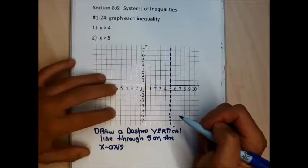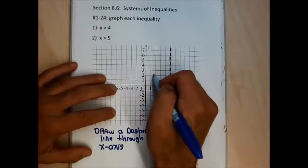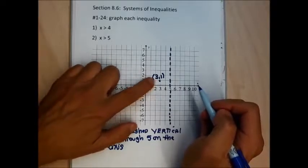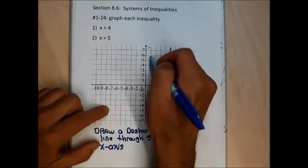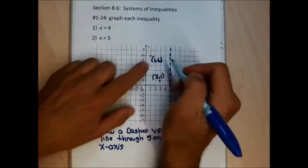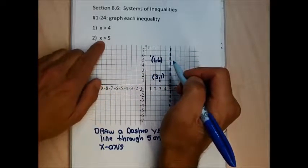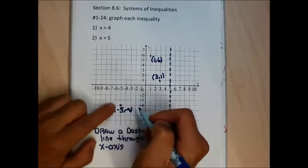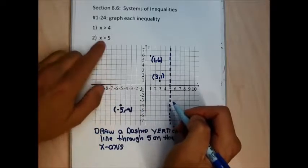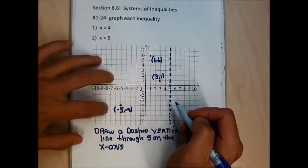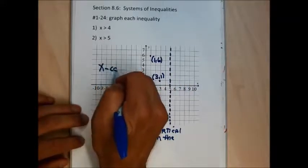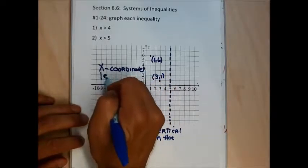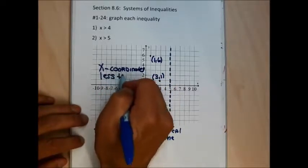Any point to the left of this line — like the point 3, 1 has an x-coordinate of 3, which is less than 5. The point 1, 6 has an x-coordinate of 1, which is less than 5. The point negative 5, negative 4 has an x-coordinate of negative 5, which is also less than 5. Every point to the left of that line has x-coordinates less than 5, so they don't need to be included in my answer.